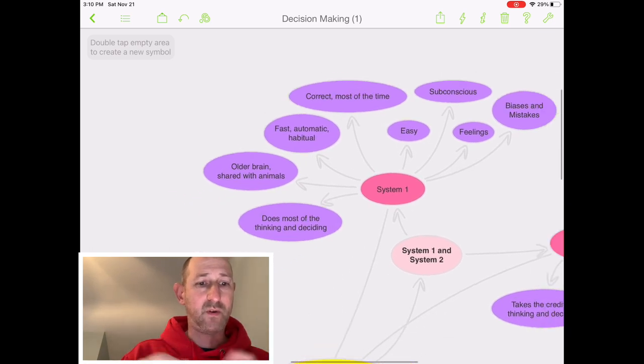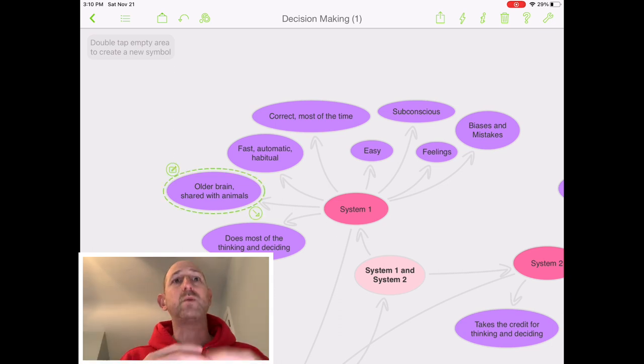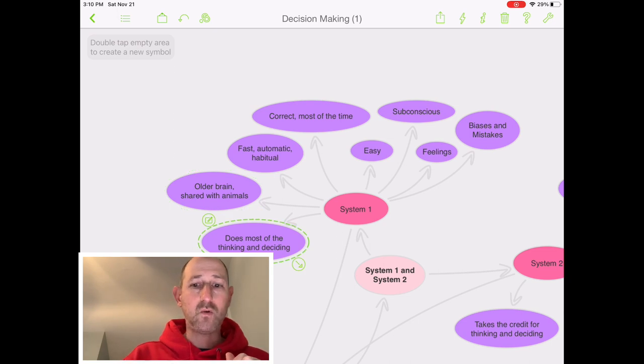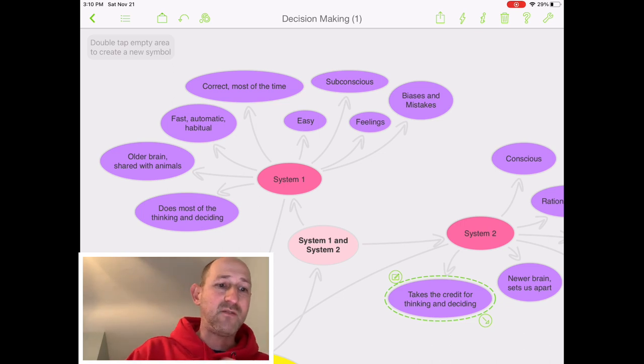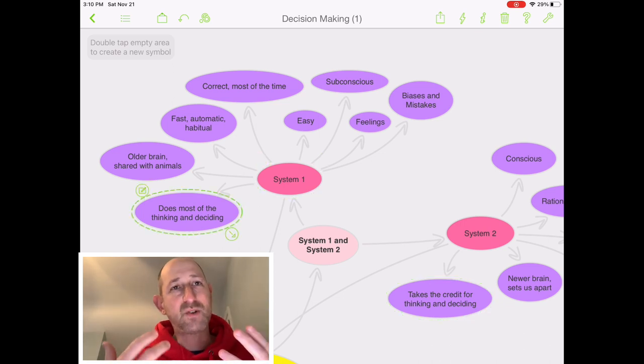Now again, System 2 with enough time can overcome those biases and mistakes. But we need to keep in mind, System 1 is always on. It is always fast. And it is always acting often before we're aware. So again, if we're sort of going with all of that, it actually is the older brain we share with animals and that it does a lot of the work there. Now, here's the thing. System 2 likes to think that it takes the credit and does most of our thinking and deciding. And in fact, it is not. Most of our thinking and deciding is actually done by System 1, not by System 2.